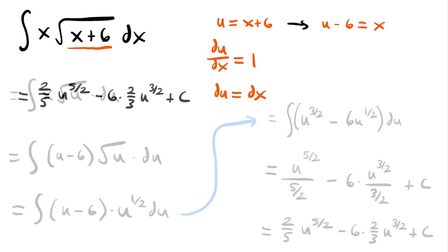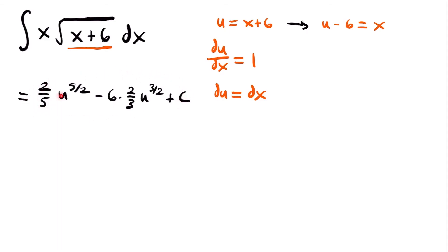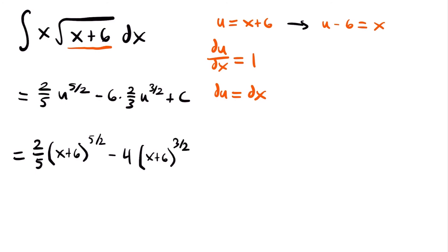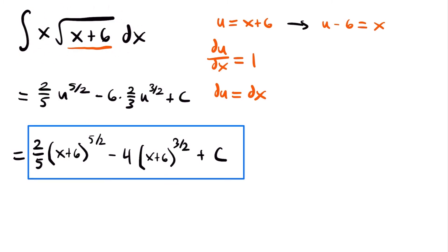Now our next step to get the final solution is to replace u with what we set it equal to. We set u equal to x plus 6, so replacing each u with x plus 6 gives our final answer. We have two-fifths times x plus 6 to the five-halves power, minus 6 times two-thirds — which equals four — times x plus 6 to the three-halves power, plus C. This is the final answer to this integral using u-substitution.